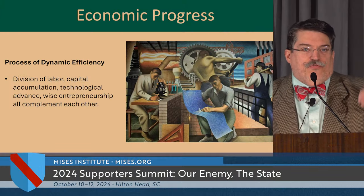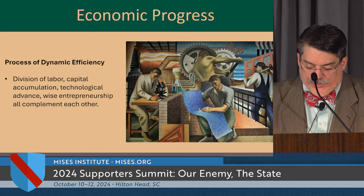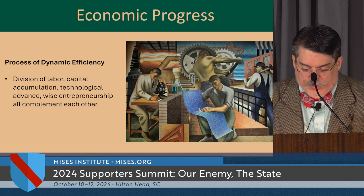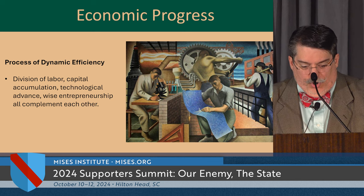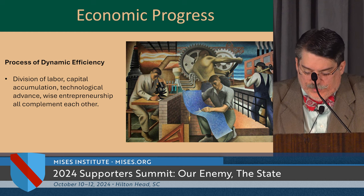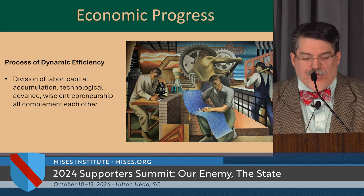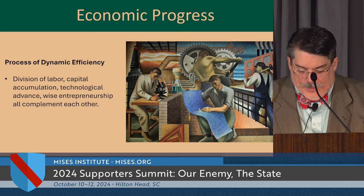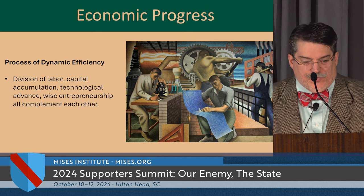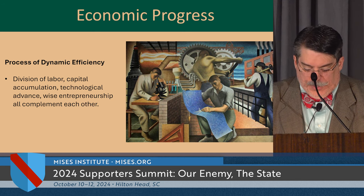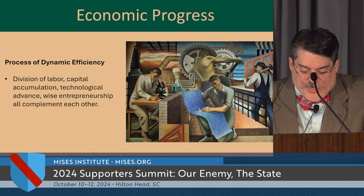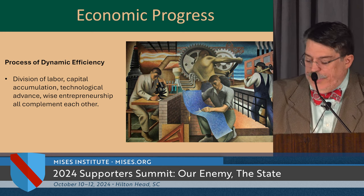None of these vehicles of prosperity are autonomous. It's a process of dynamic efficiency: a highly developed division of labor would be impossible without the accumulation and use of capital goods; the entrepreneur must invest real capital goods in the production process and be an actual owner of capital; and technology must be embodied in capital goods. Capital accumulation and entrepreneurship are essential for economic progress to take place.